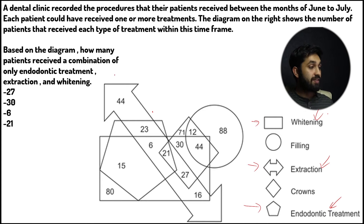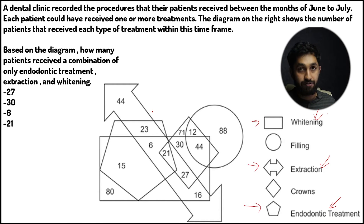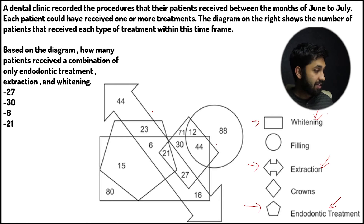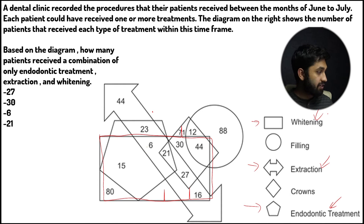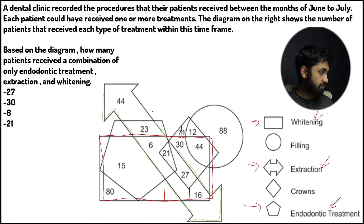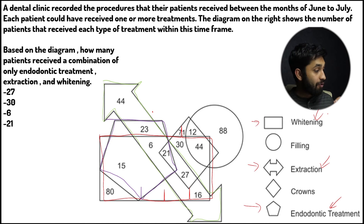It's asking how many patients received a combination, meaning all three shapes would have to overlap, and all the numbers within that overlap are our answer. So we've got the rectangle here, then we have the double-headed arrow here, and then we have the pentagon here. Our main focus should be on the overlap.